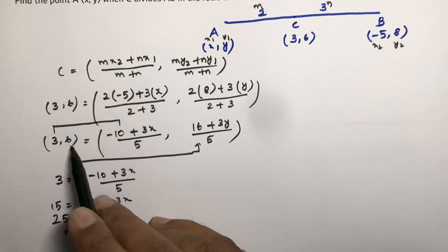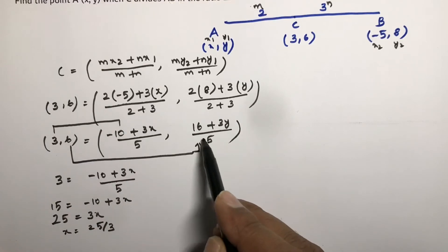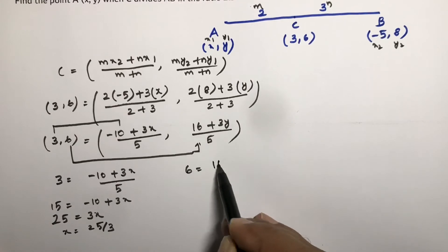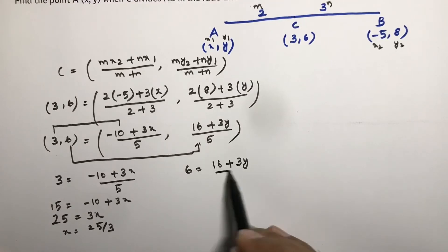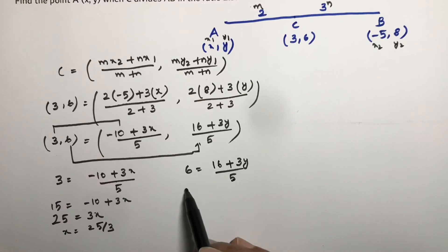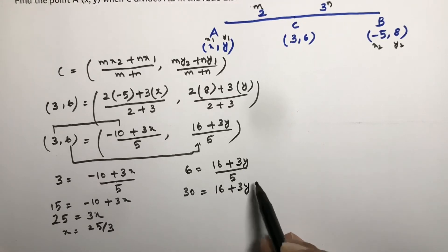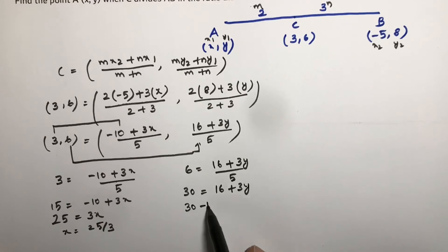In the same way if I equate the ordinate, that Y coordinate, 6 equals 16 plus 3Y by 5. 5 into 6, 30 equals 16 plus 3Y. 30 minus 16 equals 3Y. So 14 equals 3Y. So Y is 14 by 3.